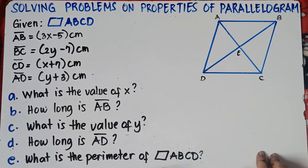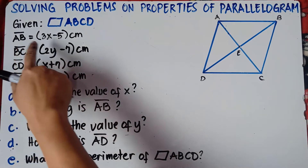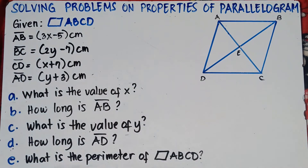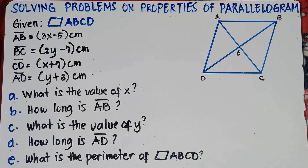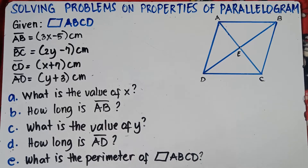So we have given parallelogram ABCD. We have given line segment AB that is 3X minus 5 cm, line segment BC that is 2Y minus 7 cm, CD that is X plus 7 cm, and line segment AD that is Y plus 3 cm. So we have some questions: Letter A — what is the value of X? Letter B — how long is AB? Letter C — what is the value of Y? And so on.